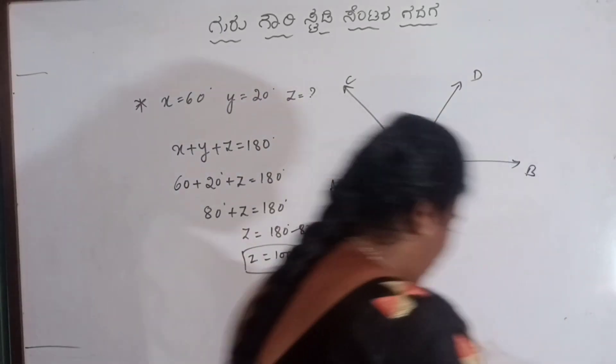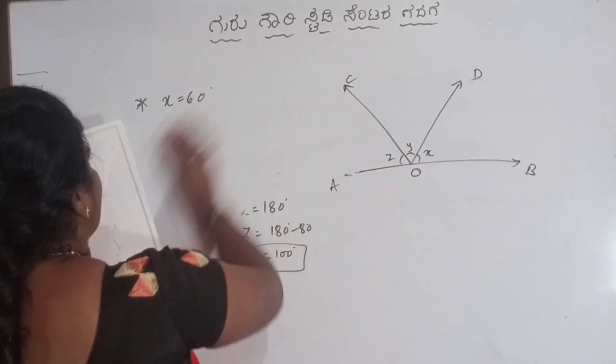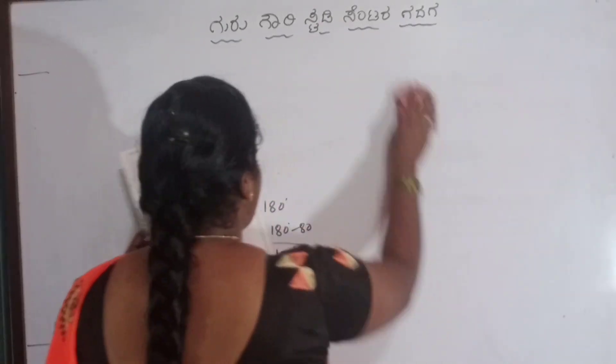Next, number two: ratio is given. Ratio is given — one diagram is given.